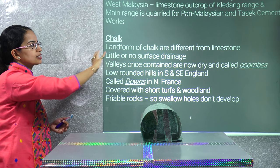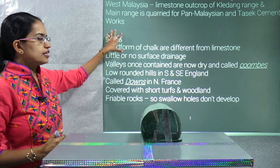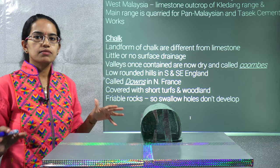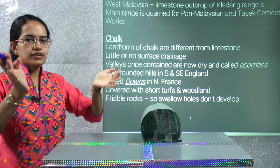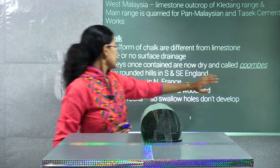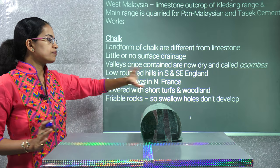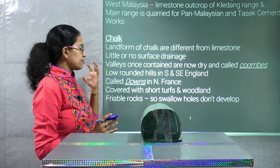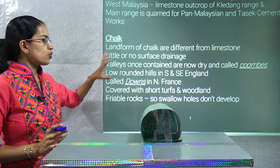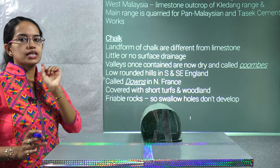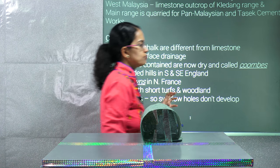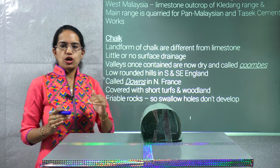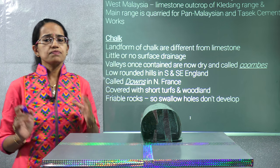Chalk topography and its landforms are somewhat different from limestone landforms. Surface drainage is seen only during rainfall and the region is dry otherwise, forming depressions or valleys known as combes. Small rounded hills in south and southeast England are known as downs. In north France, the rock is mainly friable, so swallow holes do not develop — this is an important characteristic of chalk topography.